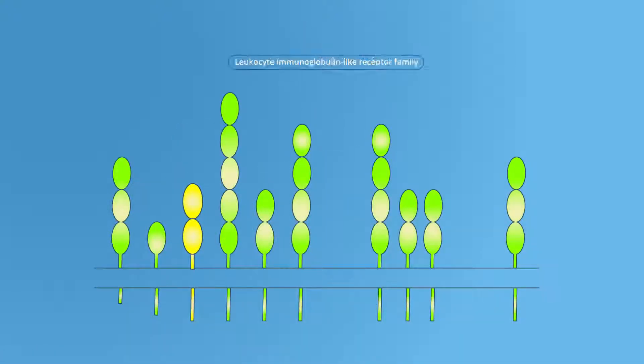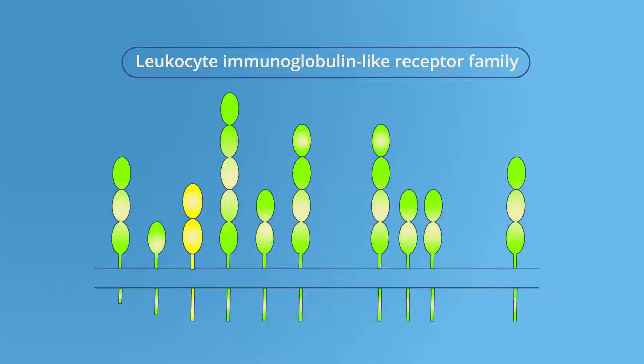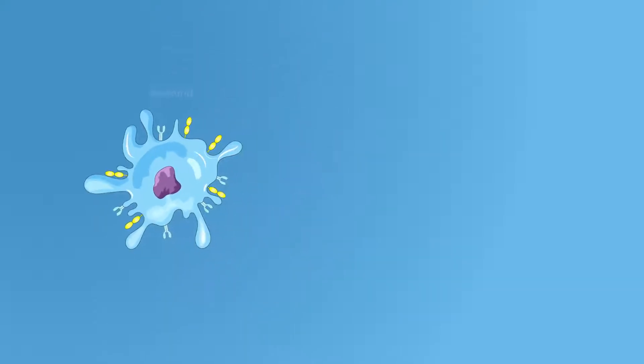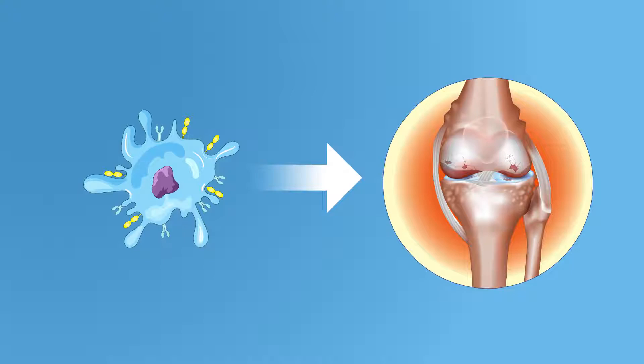It is a member of the leukocyte immunoglobulin-like receptor family and is found on the antigen-presenting dendritic cells, which are a type of immune cell important in the pathogenesis of rheumatoid arthritis.